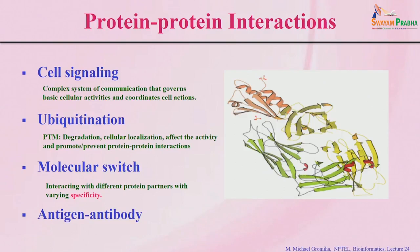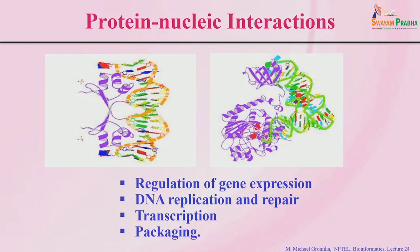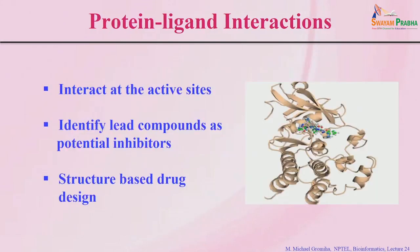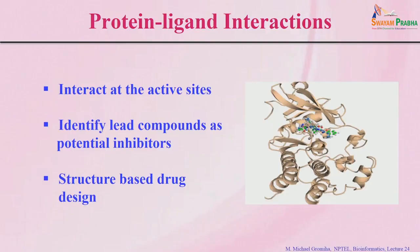Protein-nucleic acid interactions are important for the regulation of gene expression, DNA replication and repair, transcription, and packaging. Protein-ligand interactions are also important because ligands can bind to active sites, change the conformation of the protein, and inhibit several activities. Protein-ligand interactions are important in structure-based drug design for identifying lead compounds or protein inhibitors for various targets involved in different biological pathways and diseases.